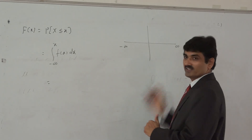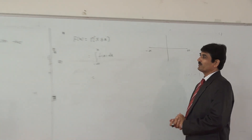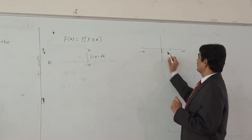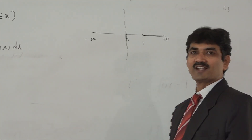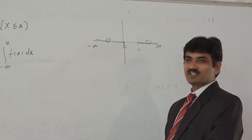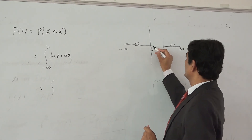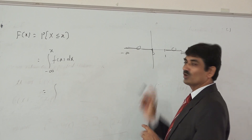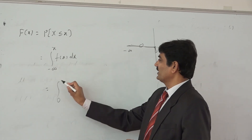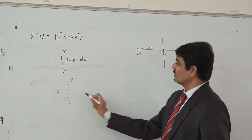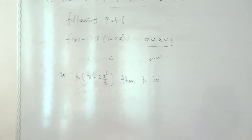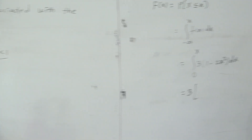By definition, the cumulative distribution function F(x) = P(X ≤ x) = ∫ f(x) dx from minus infinity to x. Since the function is defined over 0 to 1 and equals 0 otherwise, the lower limit becomes 0. So we evaluate the integral from 0 to x of 3·(1 − 2x²) dx.